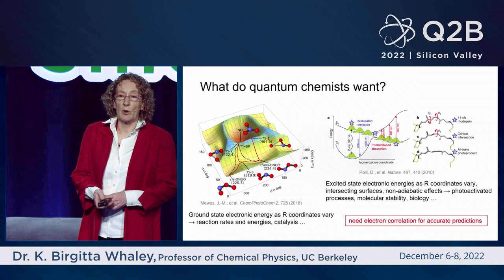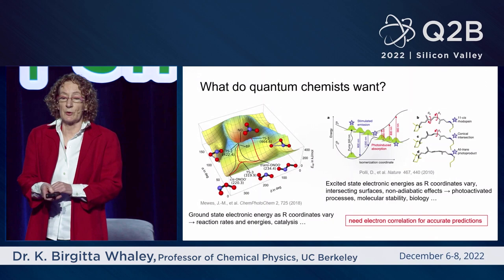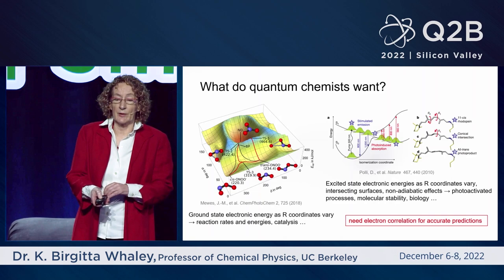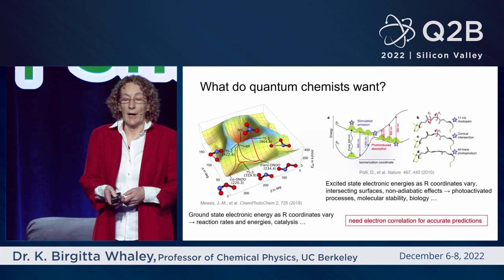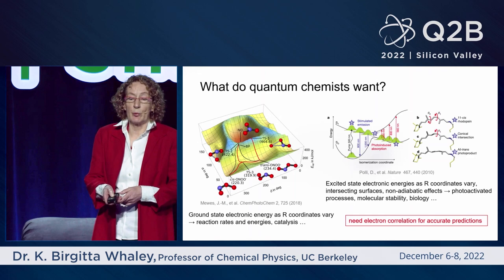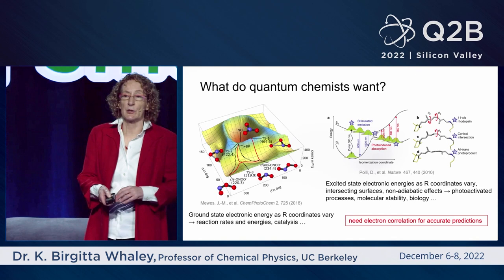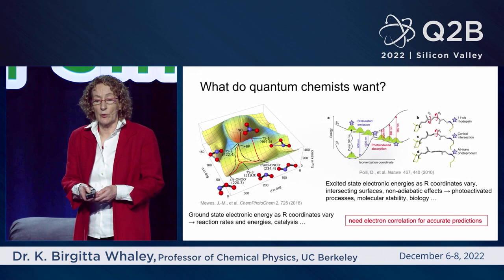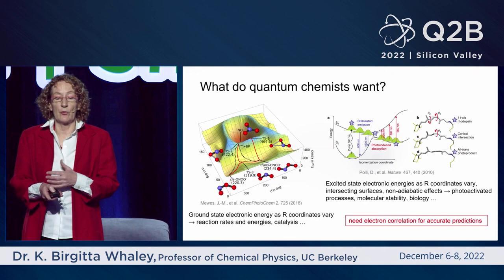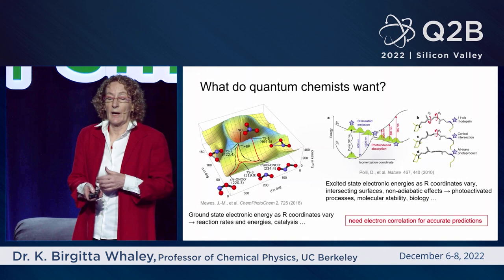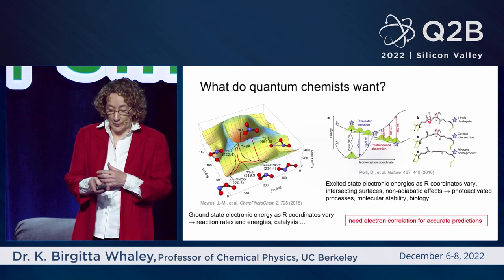What quantum chemists mostly want to compute — about 95% of what they want to compute — is what's called a potential energy surface, which is basically the solutions to solving the electronic Schrödinger equation as a function of the nuclear coordinates capital R, shown here for a simple two-dimensional set of coordinates so that we can visualize it in three dimensions as basically a landscape of hills, valleys, and saddle points.